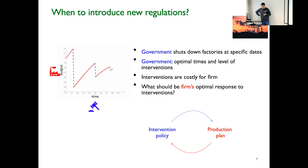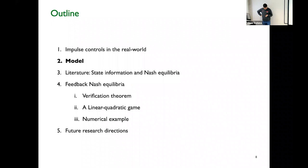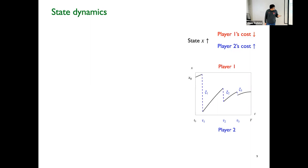Now I will abstract away from applications and talk about the mathematical model. We have a dynamical system evolving over time — the state is represented by x. This x affects the two agents differently: if x increases, player 1's cost decreases while player 2's cost increases. So player 1 wants the state to be higher and player 2 wants the state to be lower. Player 1 can continuously control the state, so player 1 is continuously increasing the state value, but at certain discrete time instances, player 2 intervenes and brings the state to a lower value. Then the state evolves again until player 2 intervenes.